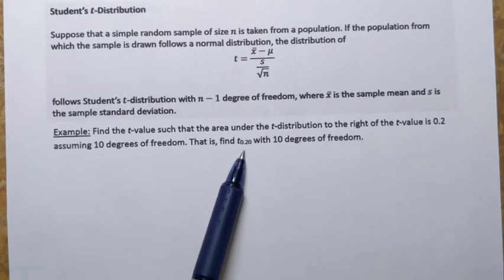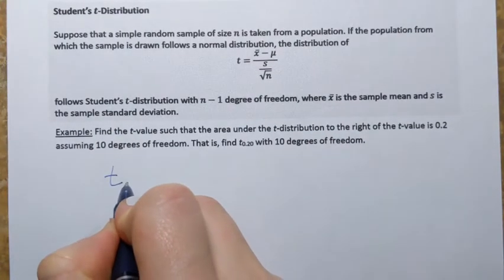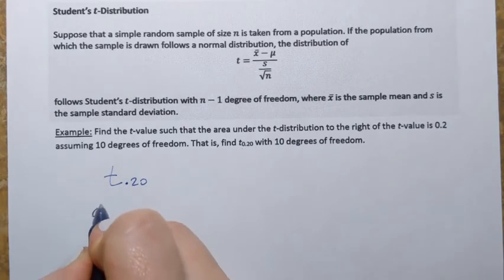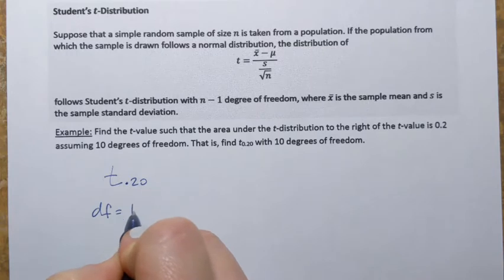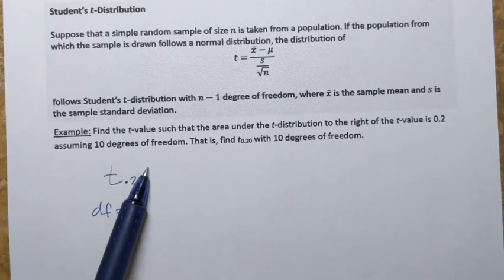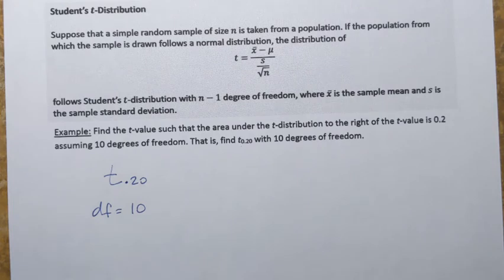So in other words, find t with subscript 0.20 with 10 degrees of freedom. So df represents degrees of freedom. Now as you remember, when we use subscript next to z-value or in this case t-value, that always represents area to the right.